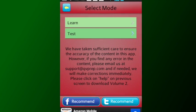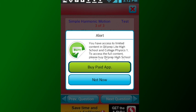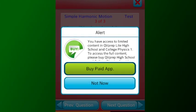The app allows you to post your score on your Facebook or Twitter account or email it to yourself or someone else. The QVPrep Lite app has limited content and allows you to buy the paid version.